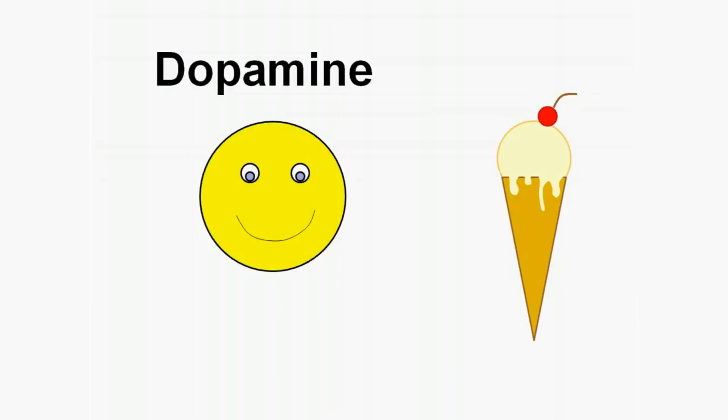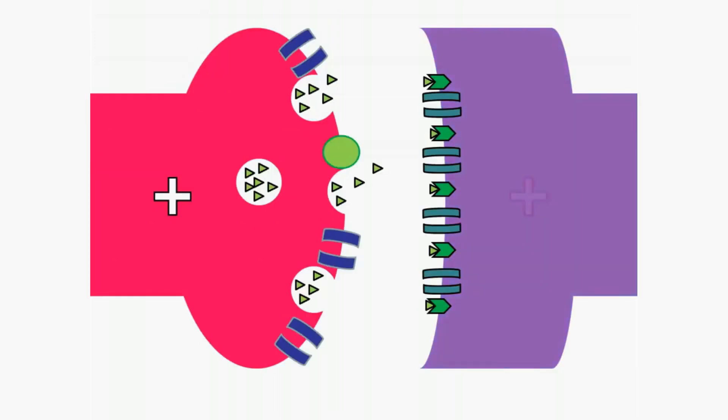However, dopamine does not remain in the synaptic cleft forever. Instead, following nerve cell stimulation, dopamine is gradually removed from the synaptic cleft by dopamine reuptake pumps lining the edge of the presynaptic cell.